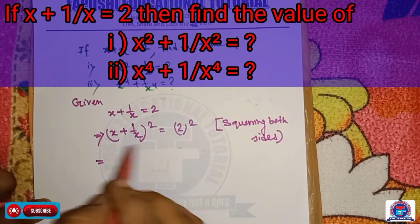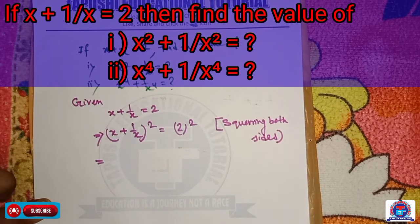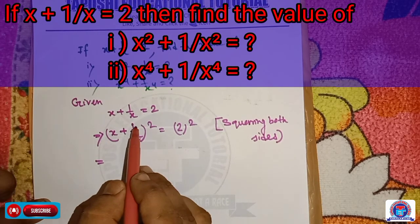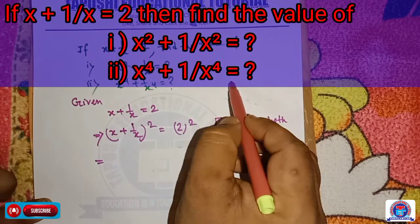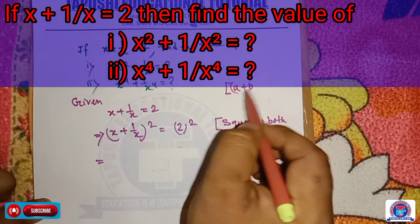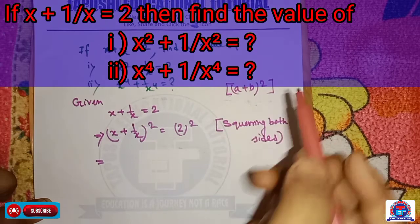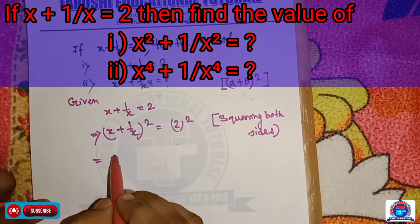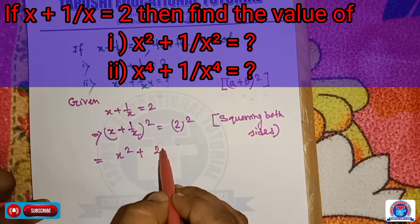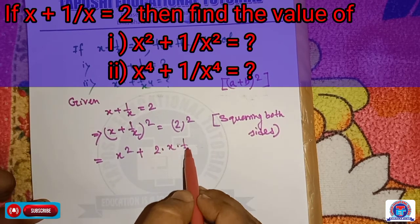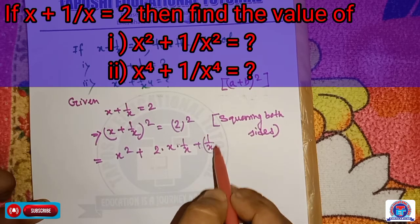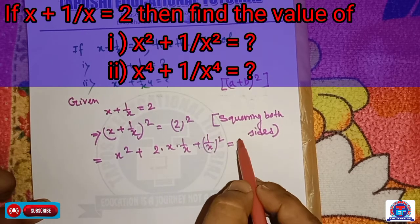We apply the a plus b its whole square formula. So it becomes x square plus 2 into x into 1 by x plus 1 by x its whole square is equal to 4.